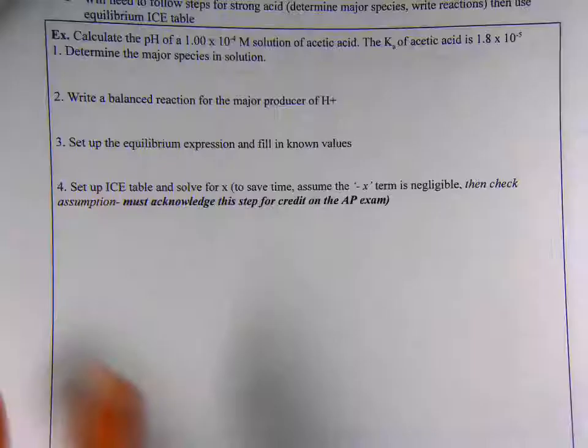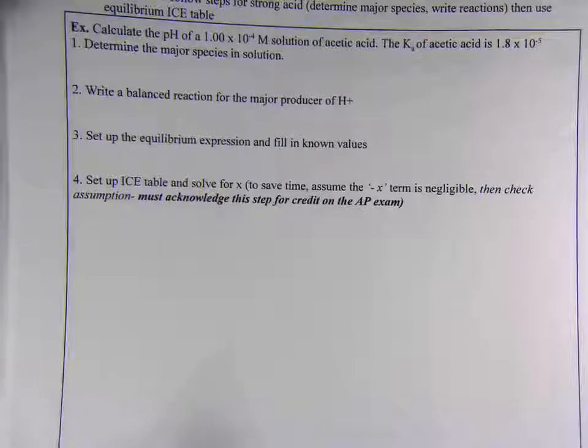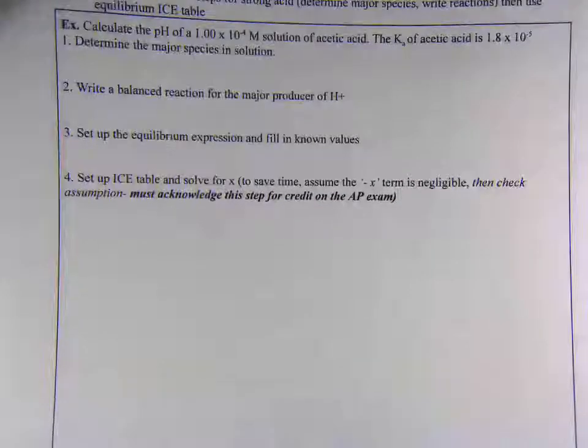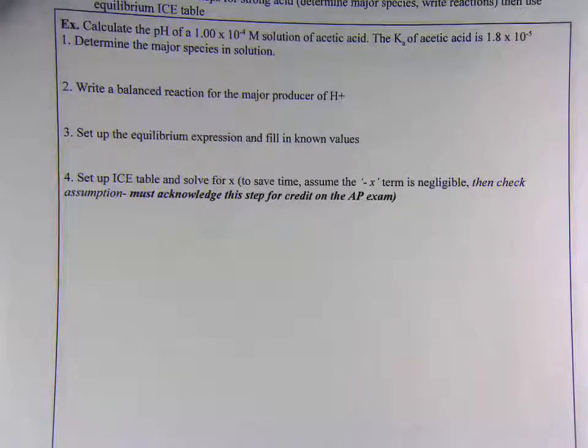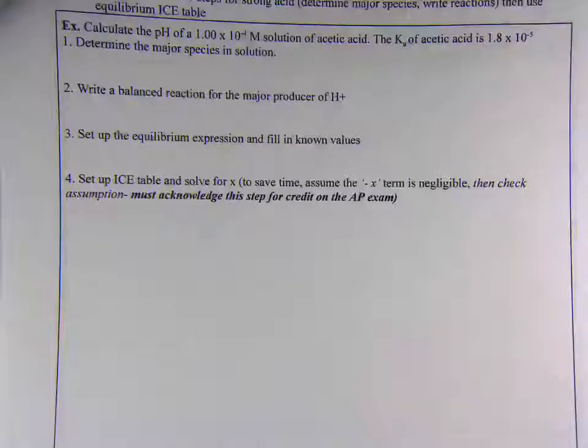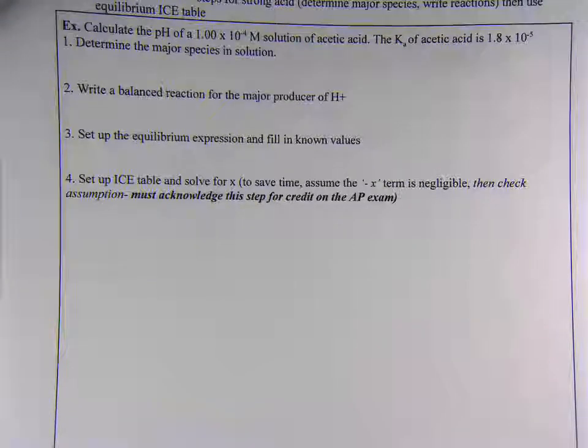The problem that we are going to work is: Calculate the pH of a 1.00 times 10 to the negative 4 molar solution of acetic acid. The Ka of acetic acid is 1.8 times 10 to the negative 5. Here are the steps that we're going to go through. These steps are laborious but I'm going to encourage you to do them for every acid based problem.